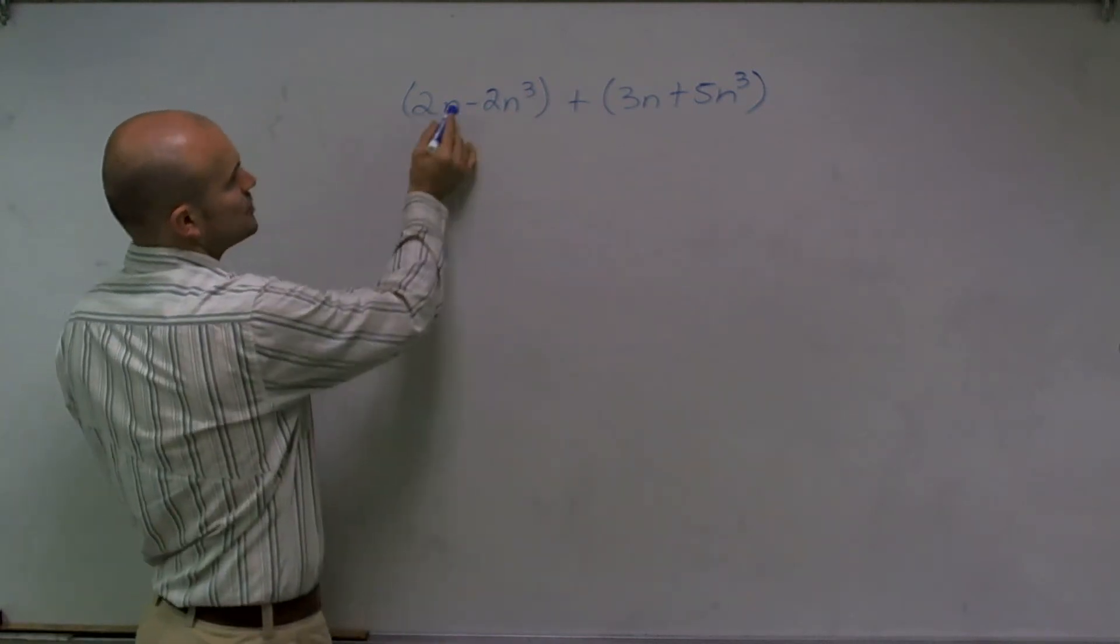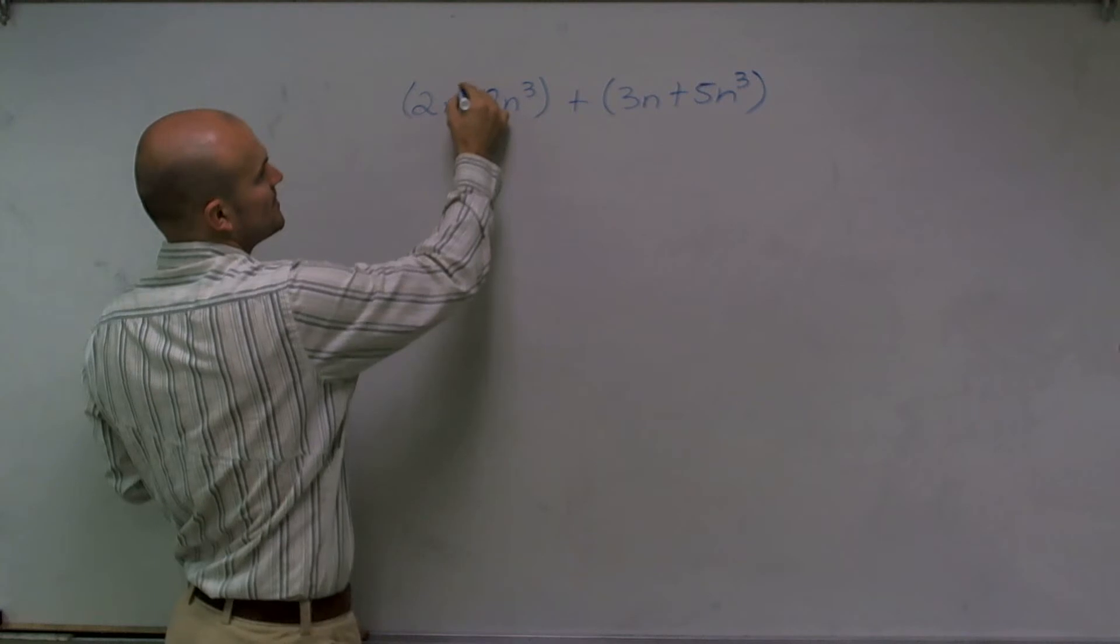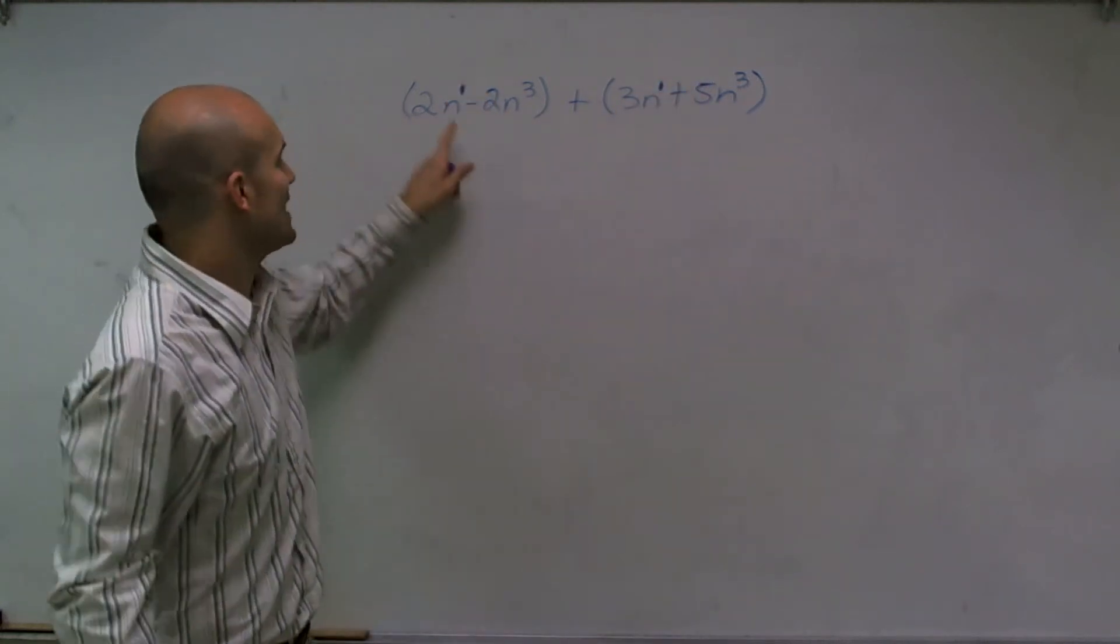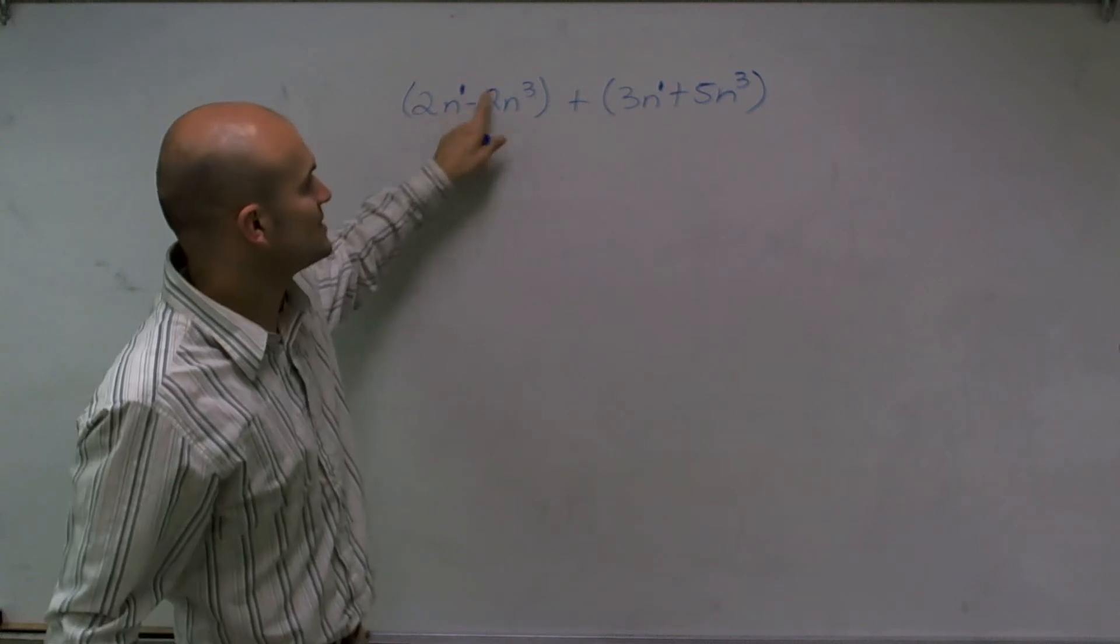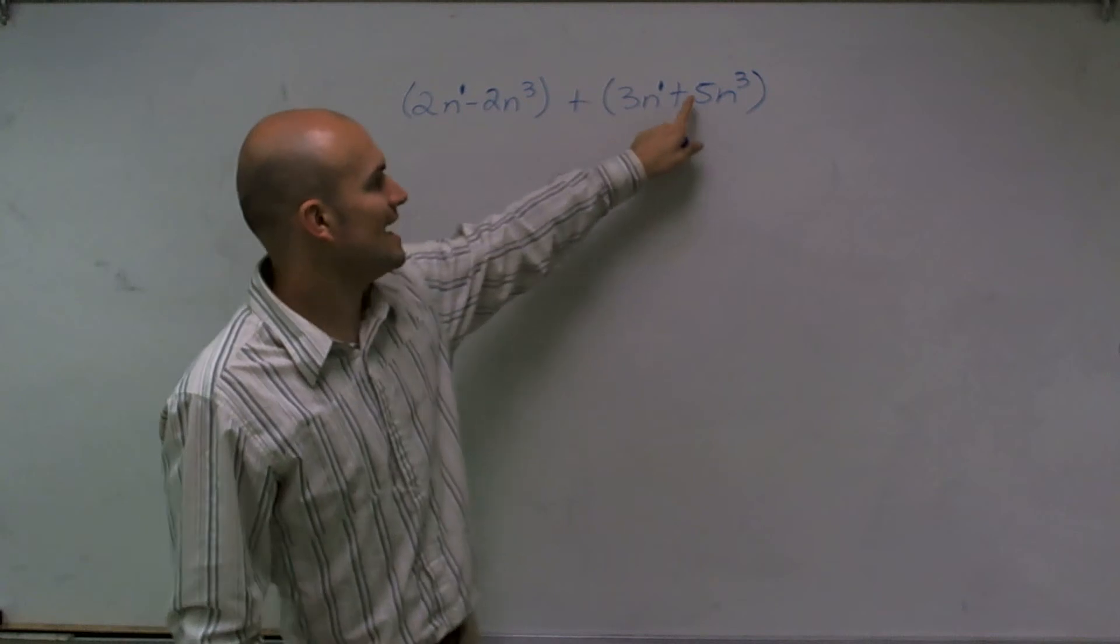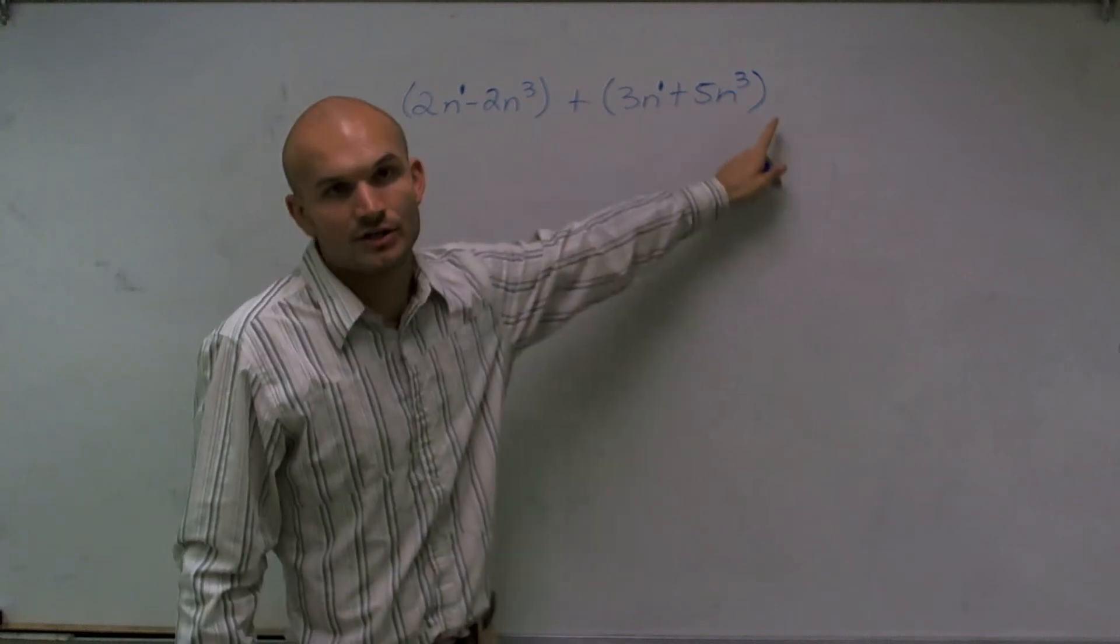So here you can say I have 2n, which is n to the first power. And then here I have 3n to the first power. Therefore, I can only combine 2n to the first with 3n to the first. And here I have negative 2n cubed, and I can only combine that with 5n cubed.